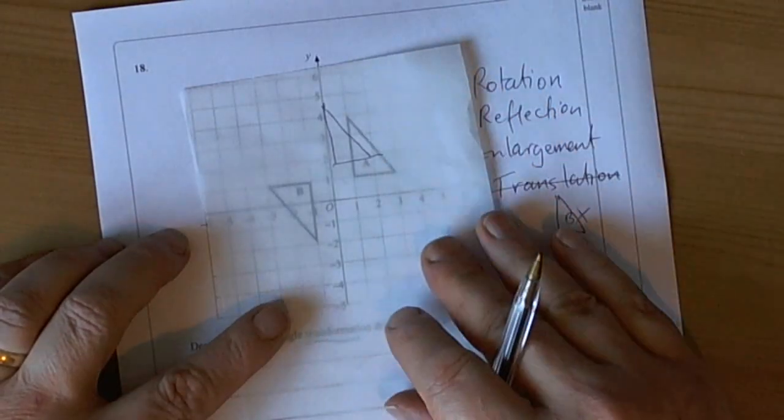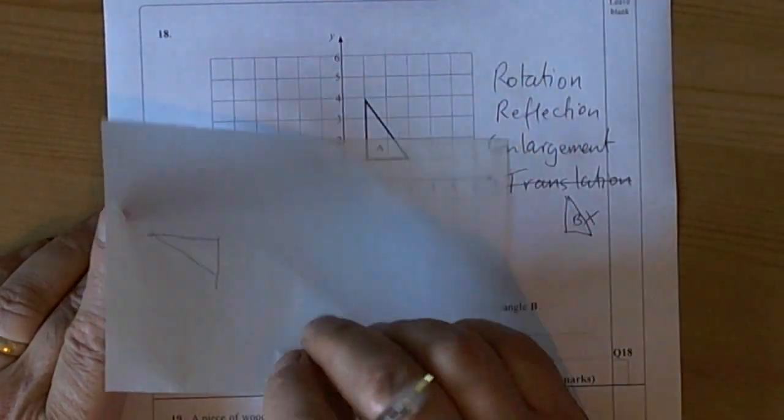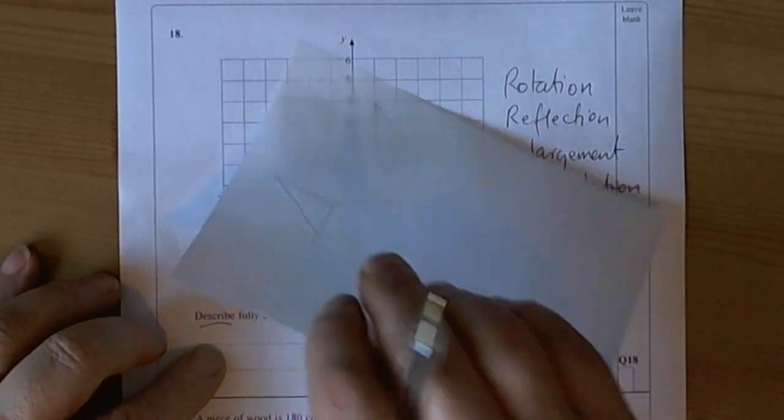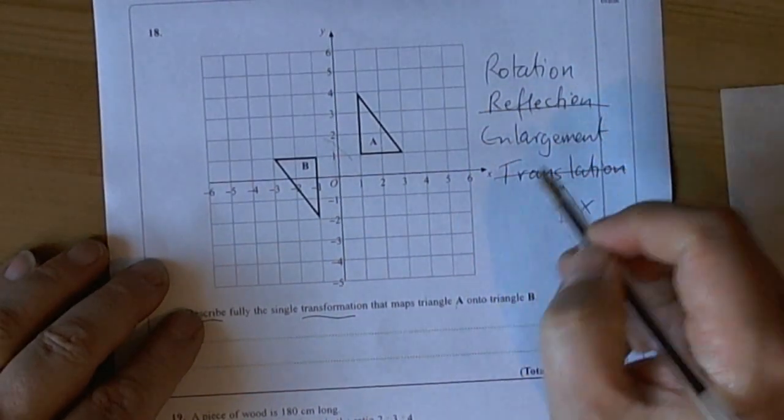And even if you get a diagonal reflection, then it would be doing something like that. So it just doesn't work for a reflection. So it's not going to be a reflection.